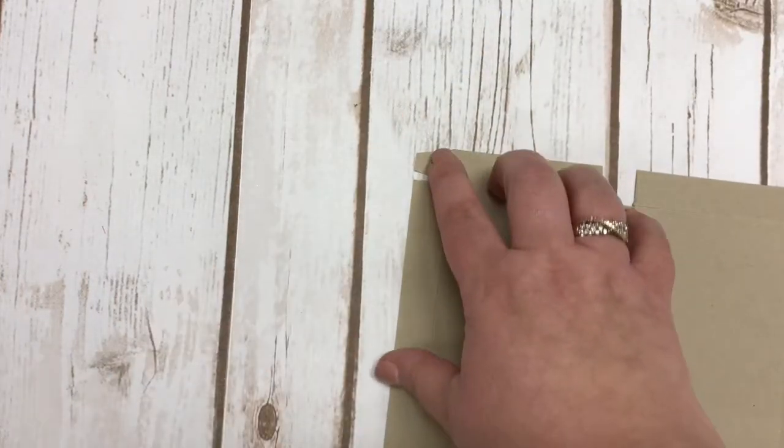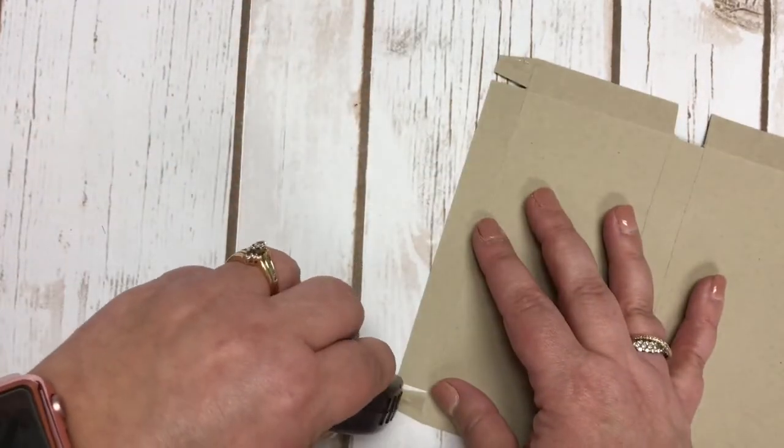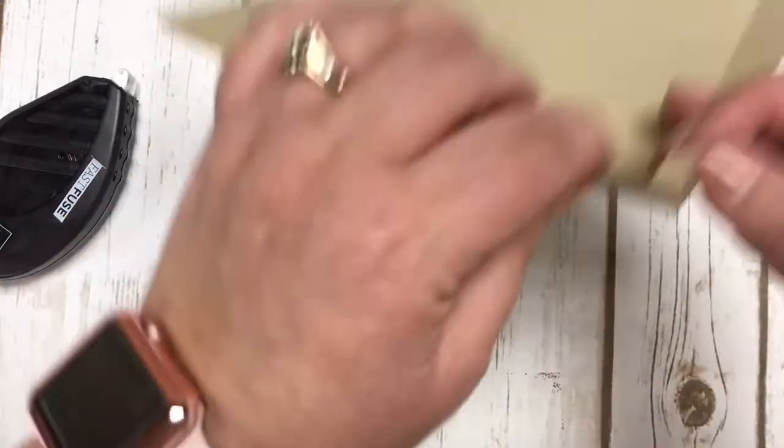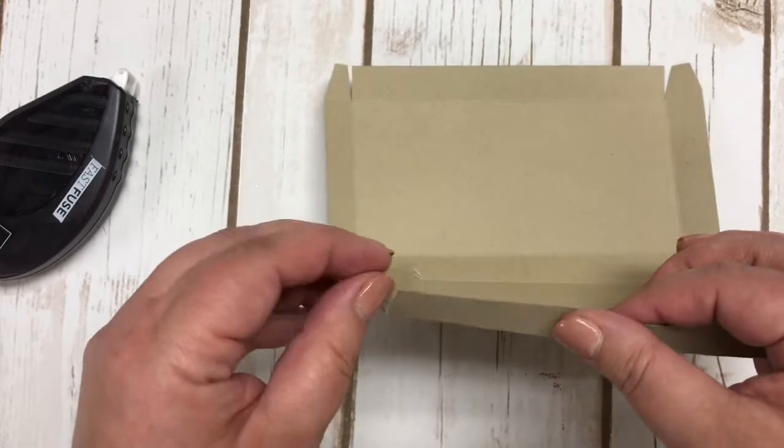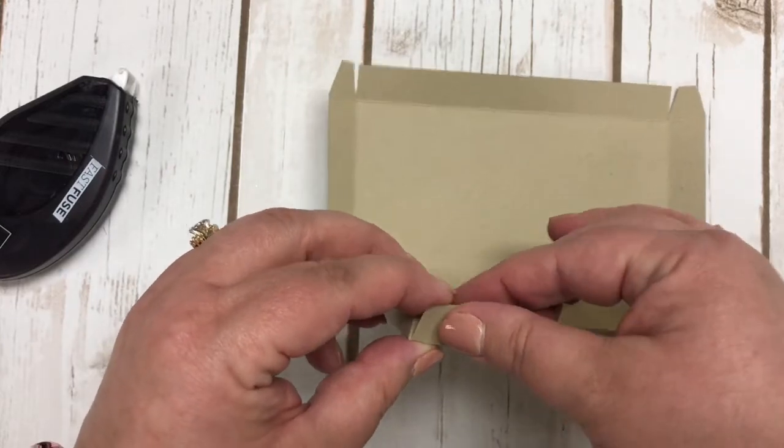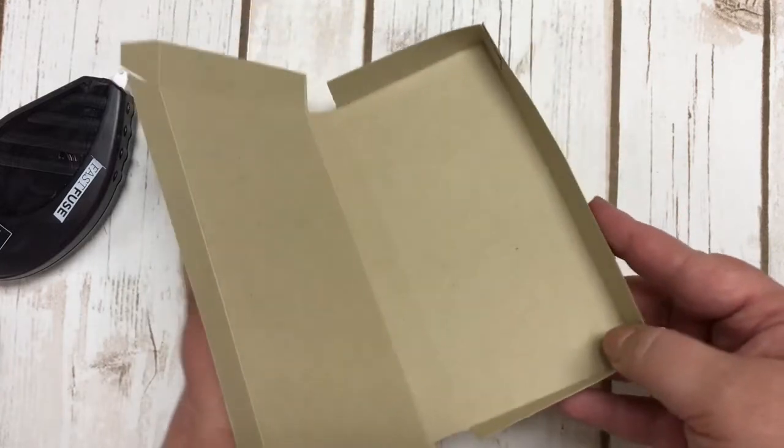From there, I'm going to turn this over and I'm going to add a little bit of fast fuse to two of these ends to glue those in place. I'm simply going to be folding this up like that, and I will have all of these measurements on my website at kimsbasementbunch.com so make sure you check that out for all of the details.